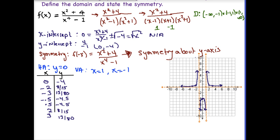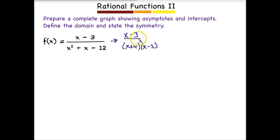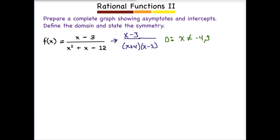Let's go ahead and try another one. If you like, you could pause this video and try to graph this one on your own, then come back and see how you did. Step one: factor. The denominator factors into (X plus 4)(X minus 3). Step two: find the domain — X cannot be negative 4 or positive 3. Step three: simplify — X minus 3 cancels with X minus 3, so now I know I'm going to have a hole because I did simplify.